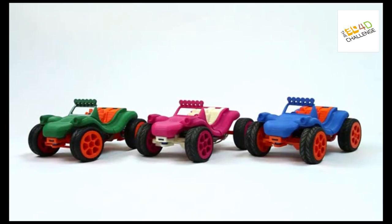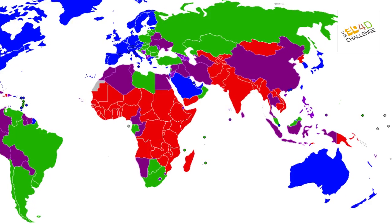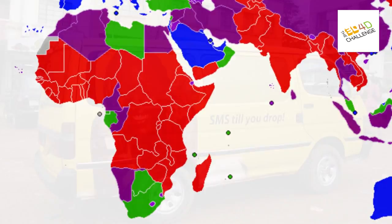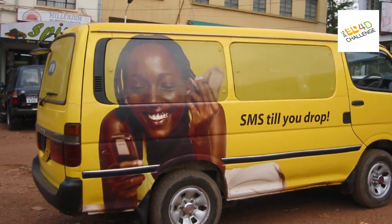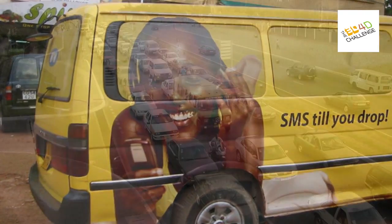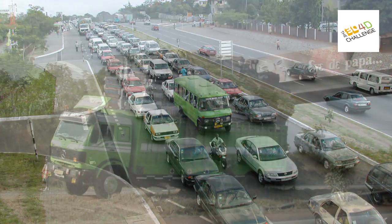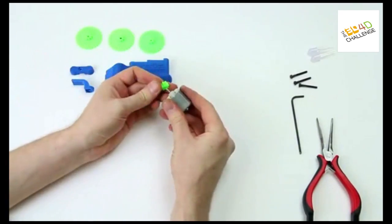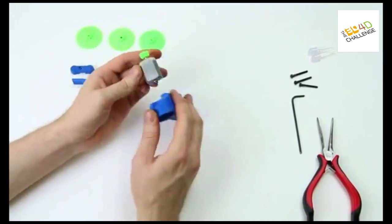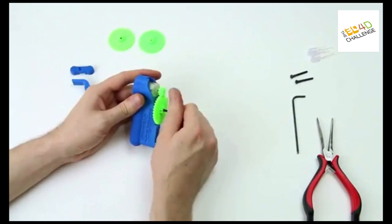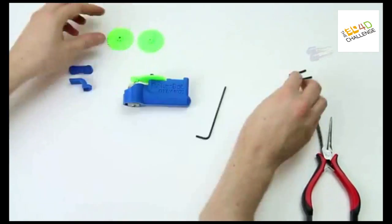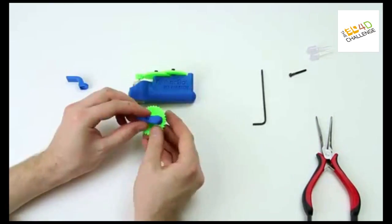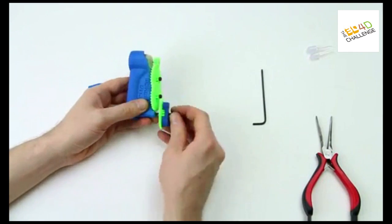So what would happen if we took 3D printing and applied it to the developing world — a world where internet-based retail is still in its infancy but connectivity is growing, but a world where the traditional supply chain logistics and delivery can take weeks, even months? How could 3D printing impact the developing world if it could be used to support local manufacture, maybe for agriculture, education, healthcare, fair trade, or simply to provide access to some basic consumer goods and hardware?